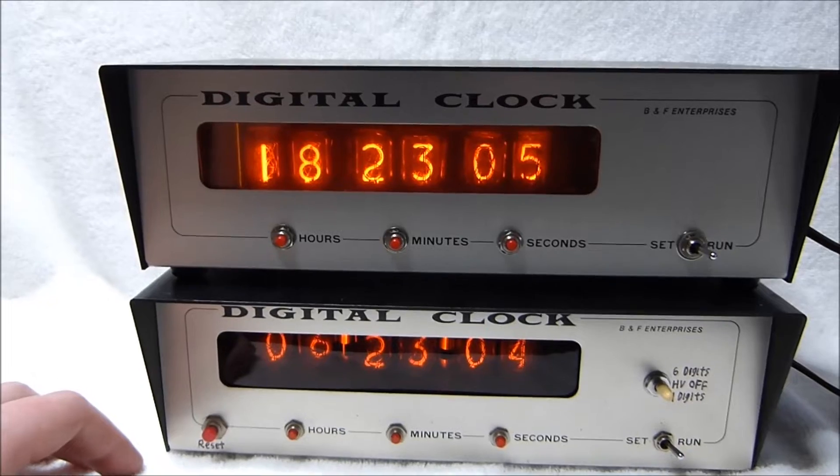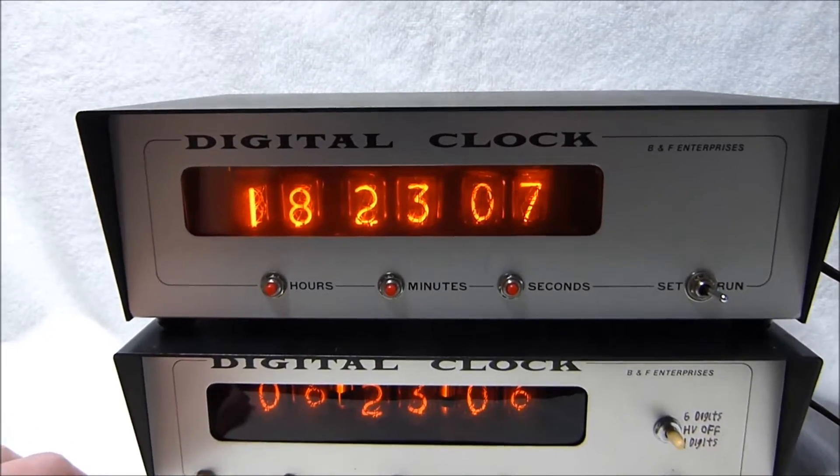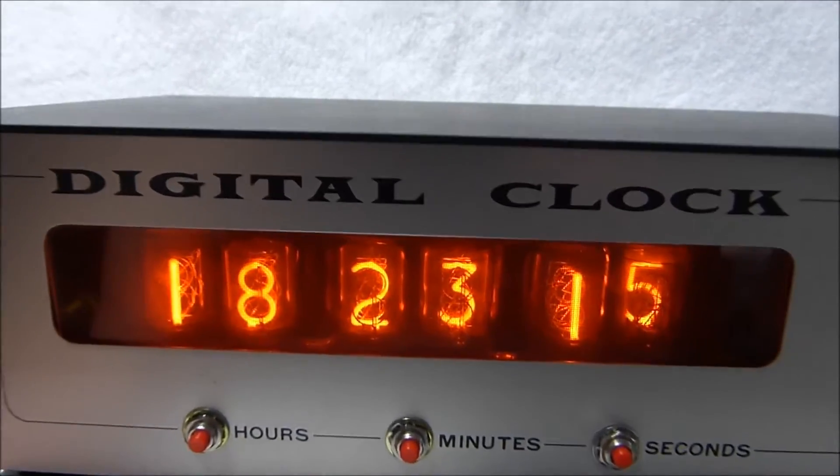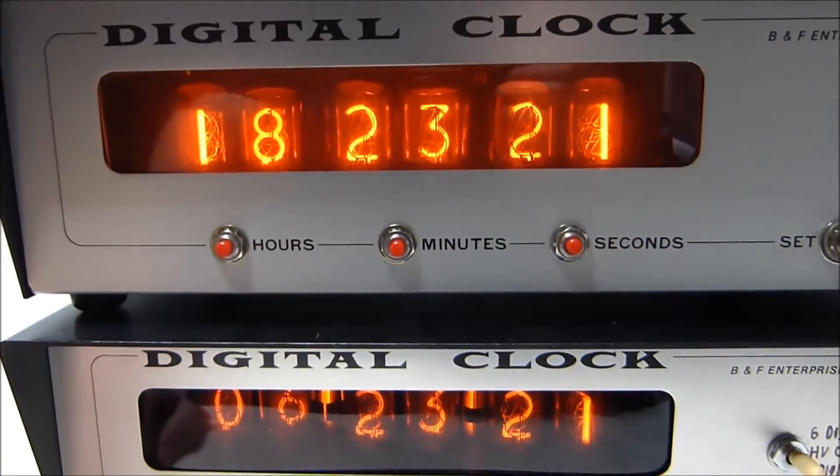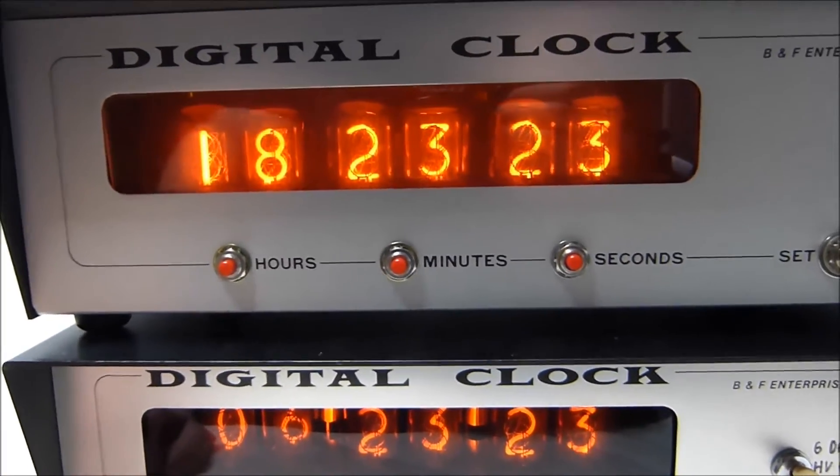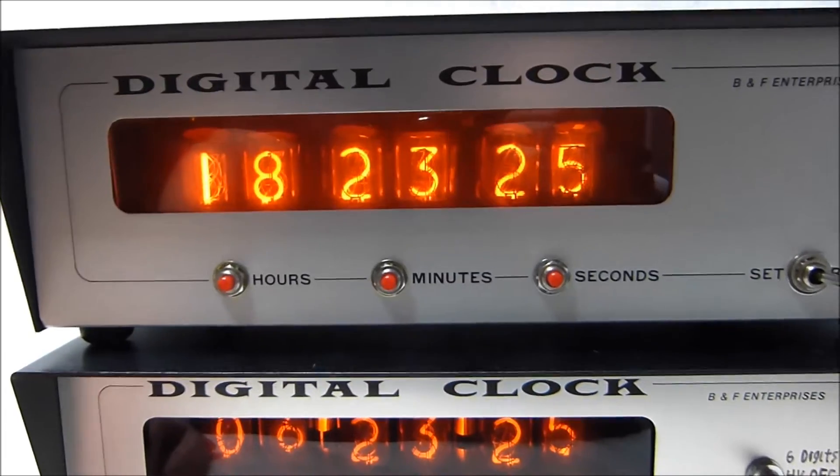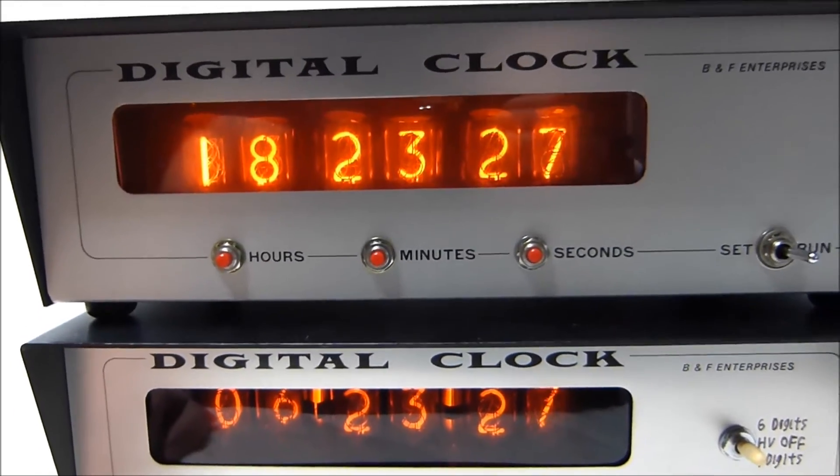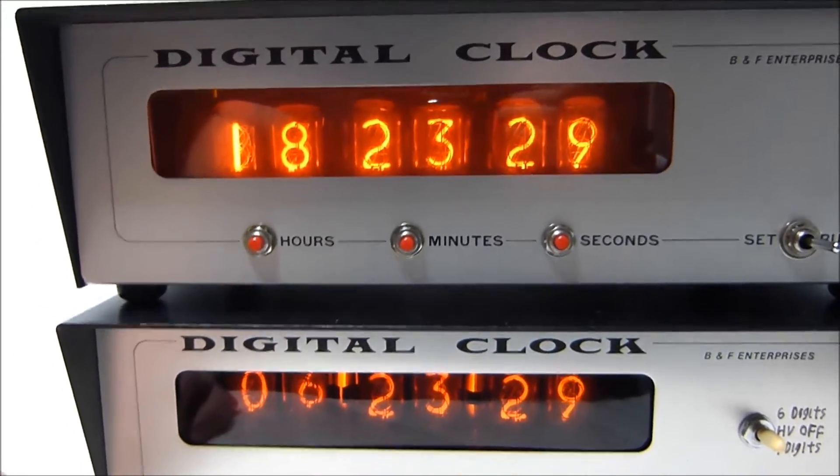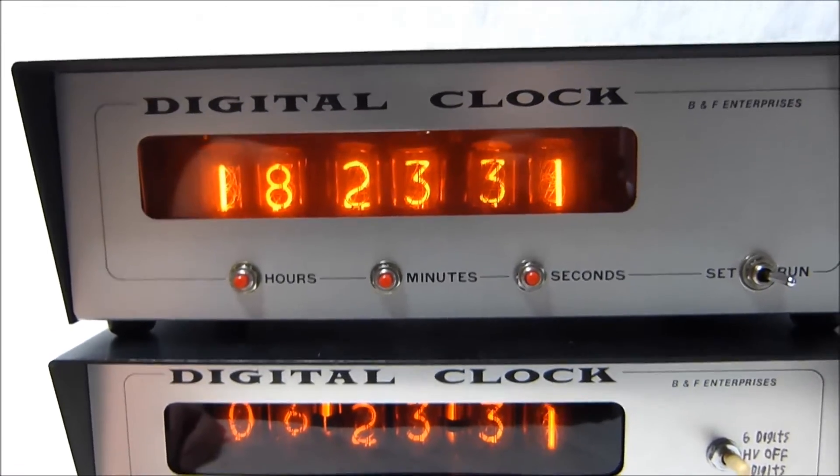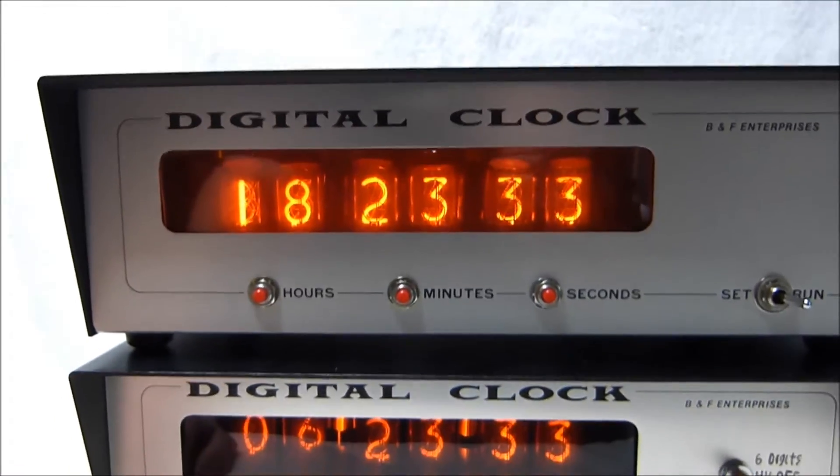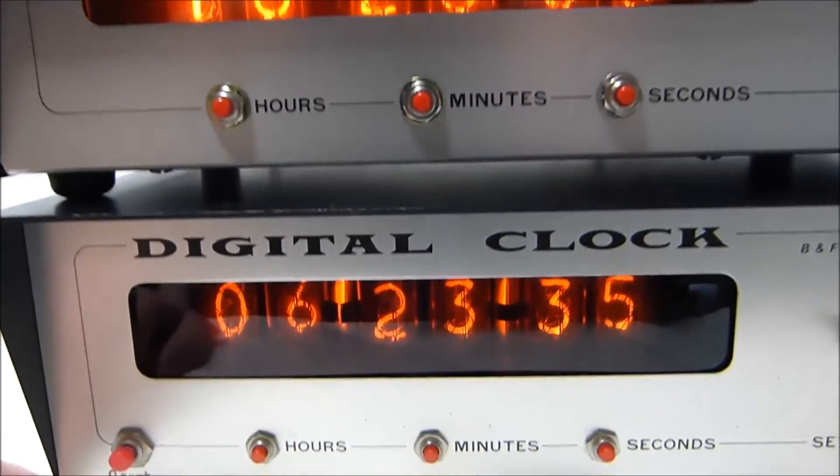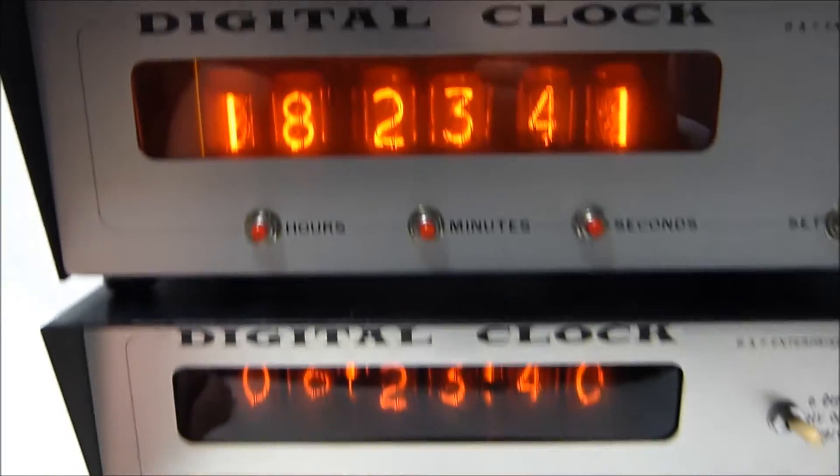By 1972, the 7-segment LED display was already out and the Nixie tube's days were very numbered. They were perhaps the most outdated display technology that was still in production by 1972, since the vacuum fluorescent display had already come out as well as the Panaplex display, which is also gas-filled but a little bit more modern.